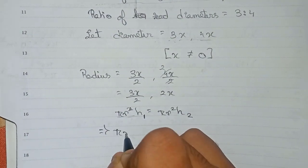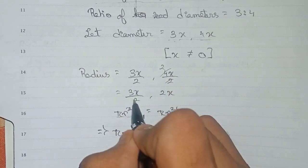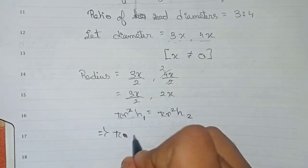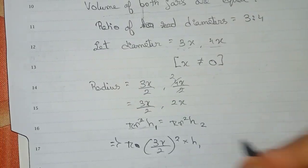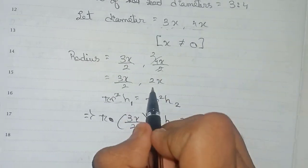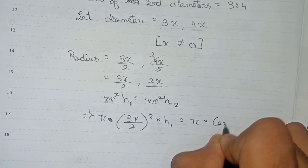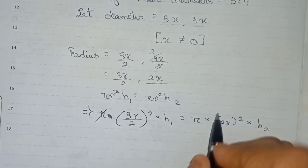So pi, first radius is 3x by 2, so 3x by 2 whole squared into h1 is equal to pi r squared into h2. From both sides you can cut pi.